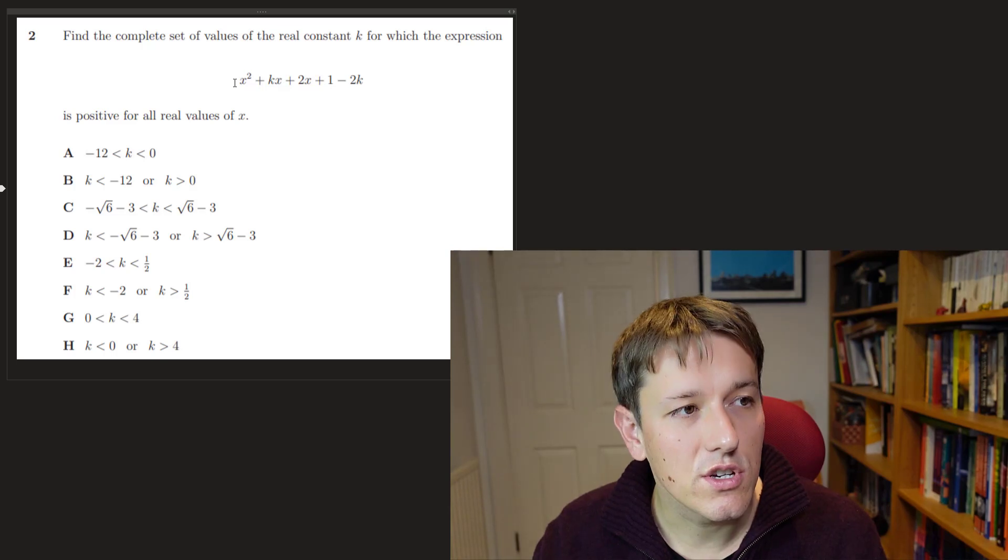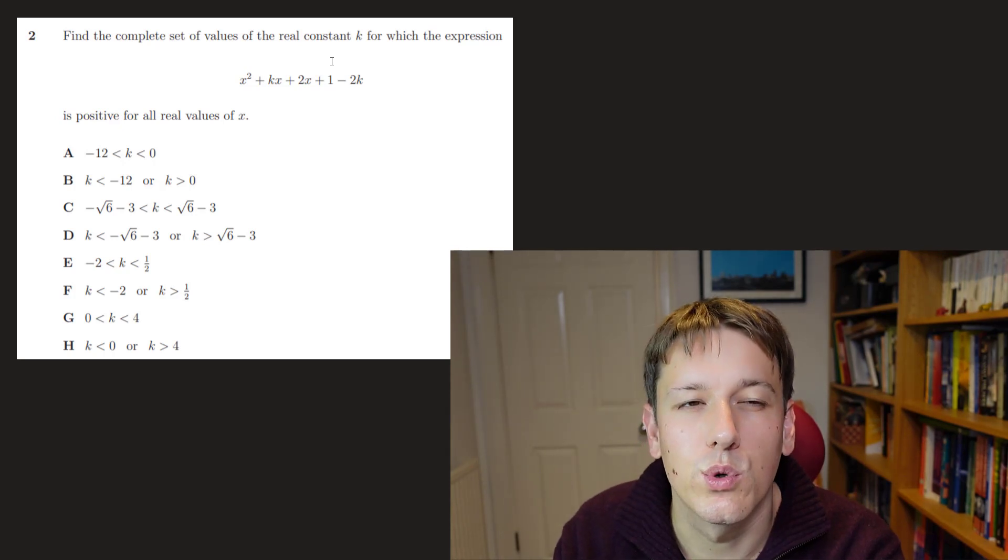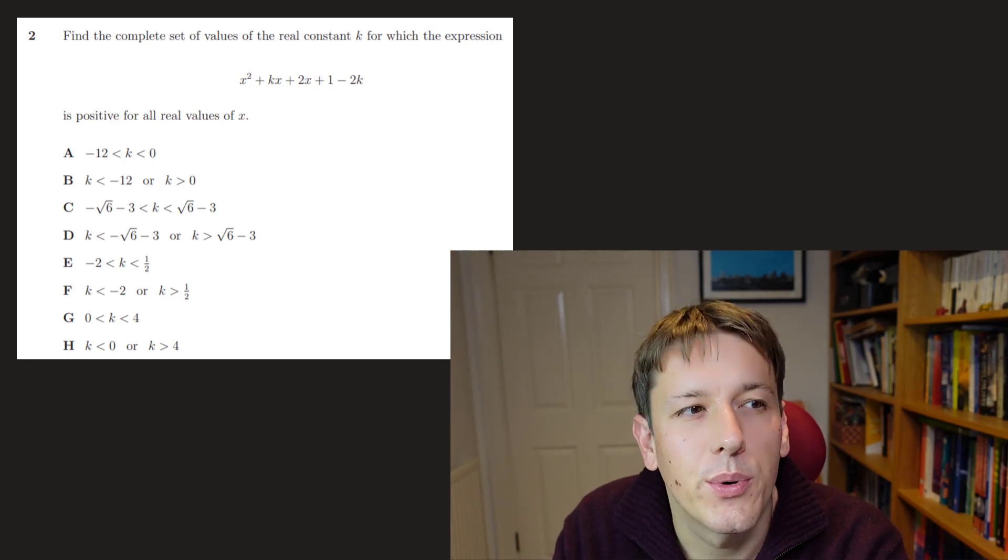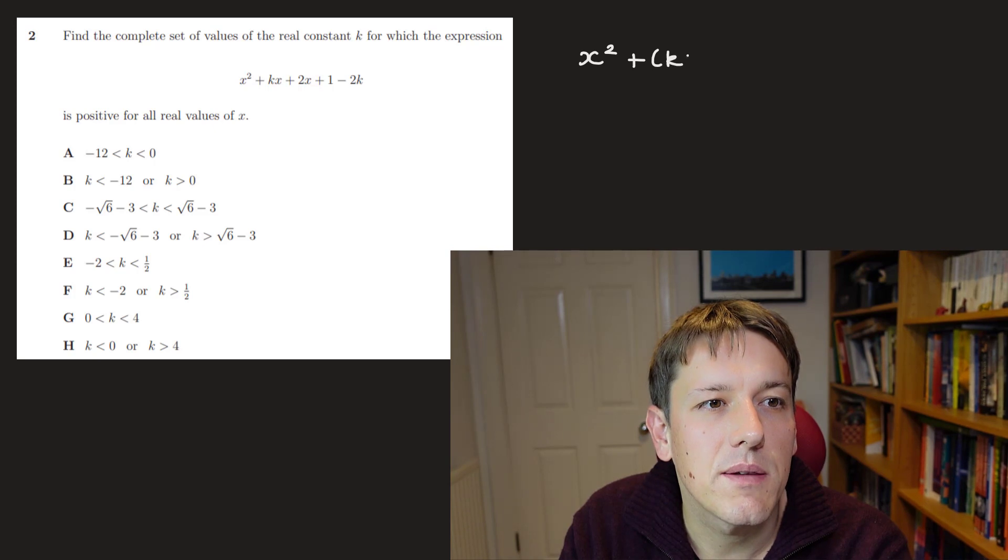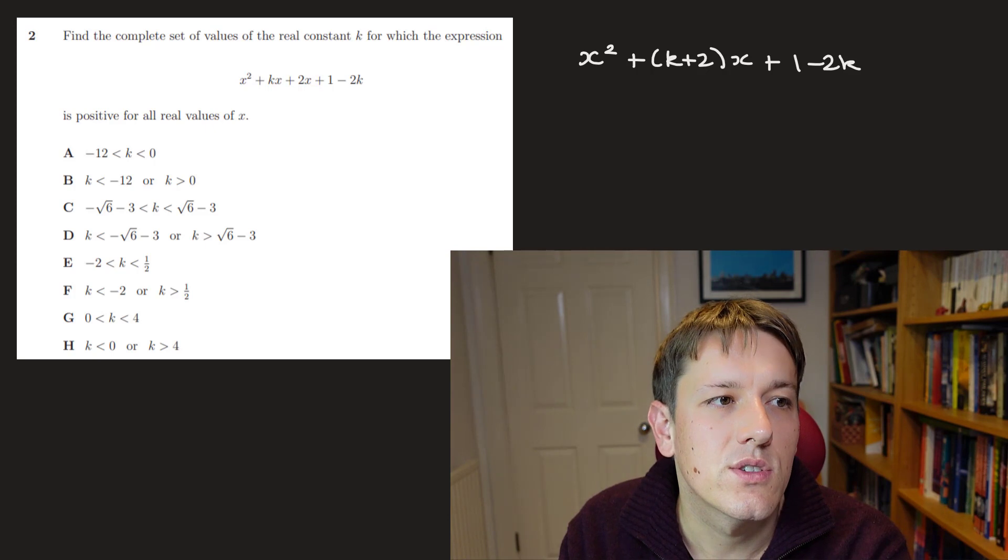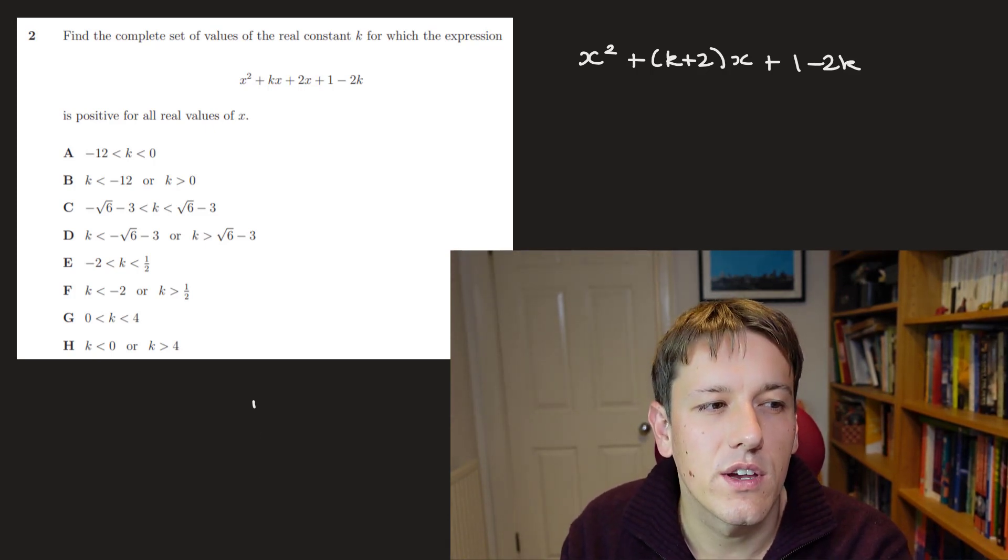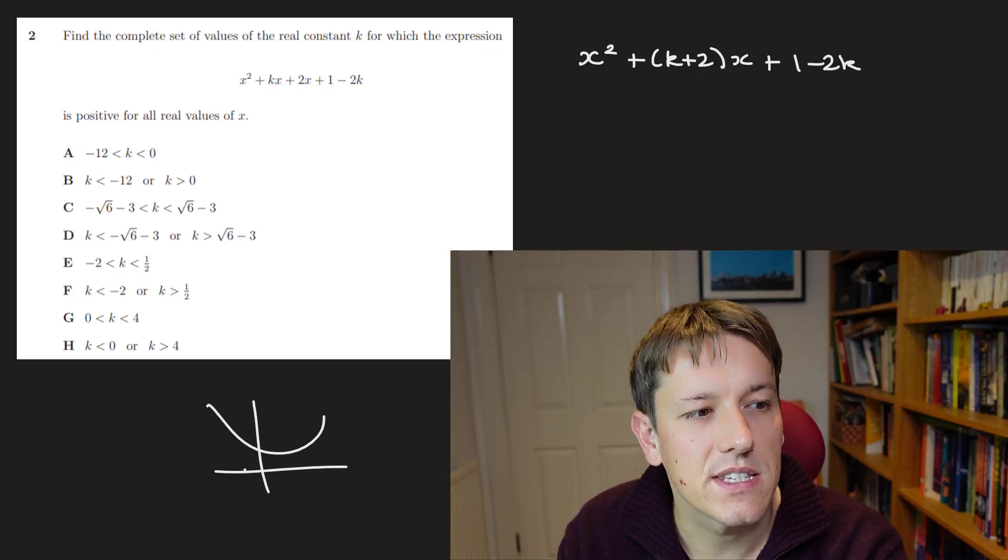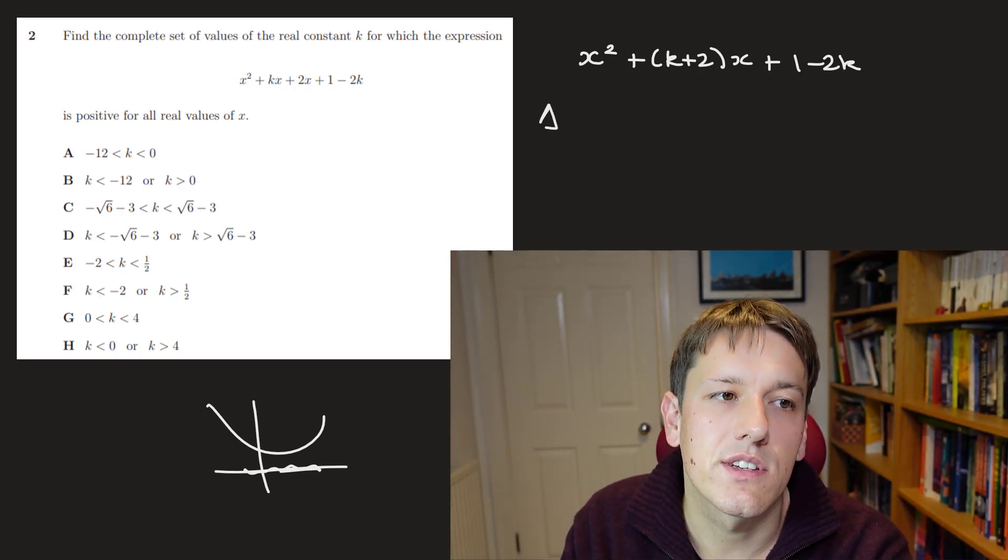OK, so in question 2, it says find the complete set of real values for the real constant k, for which this expression x² + (k+2)x + (1-2k) is positive for all real values of x. So you'll notice we've got a quadratic here. If this is going to be positive for all real values of x, it's a positive quadratic, so we know it's going to be this way up. And for it to be positive for all real values of x, that means it has no real roots. It's not going to get to the axis here. So we know the discriminant here is going to have to be negative.